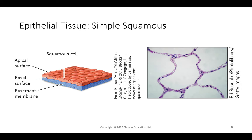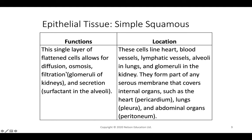Simple squamous cells are flat with a large area between them — a single layer connected to the basement membrane. They allow for diffusion and filtration, found for example in the glomeruli of the kidney when filtering blood into urine. They're also involved in secretion, such as alveolar cells in the lungs creating surfactant to change viscosity and allow faster diffusion.